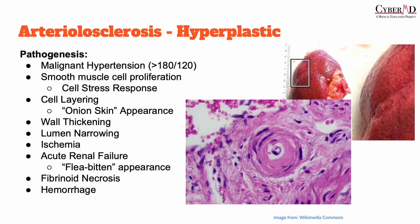This hyperplasia causes a layering of smooth muscle that gives the vasculature what is classically known as an onion skin appearance histologically. You can see it here on the screen — there's a cell, and then further out there's another layer, and further out still another layer. That's what they're talking about when they describe an onion skin appearance or layering of smooth muscle around the walls of the vasculature.